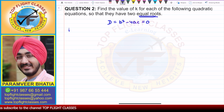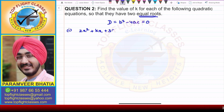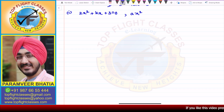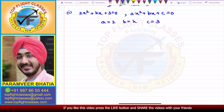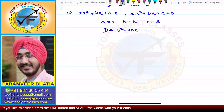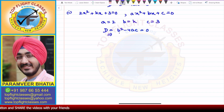For part (i), we have 2x² + kx + 3 = 0. Comparing with ax² + bx + c = 0, the value of a is 2, b is k, and c is 3. Now we find the discriminant: b² - 4ac. For equal roots, the discriminant has to be equal to zero.